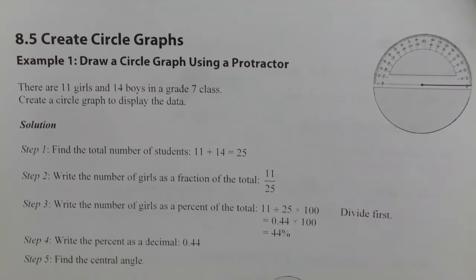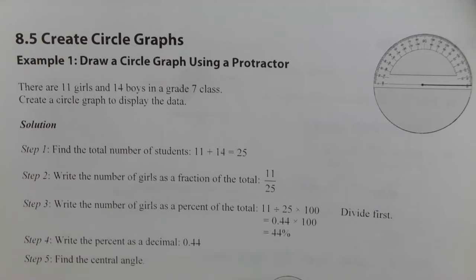Alright, let's begin section 8.5: Create Circle Graphs. Example number one: Draw a circle graph using a protractor. We're given a situation here: there are 11 girls and 14 boys in a grade 7 class. Create a circle graph to display the data. So we need to do some calculations to be able to create a circle graph.